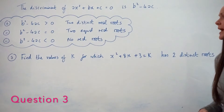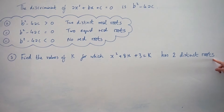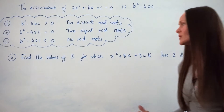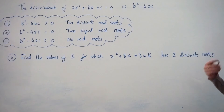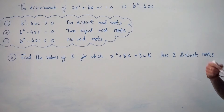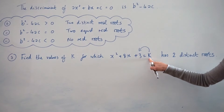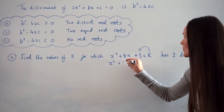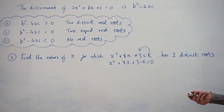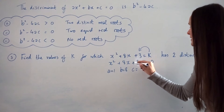In question 3, find the values of k for which x squared plus 8x plus 3 equals k has two distinct roots. When there are two distinct real roots, the discriminant is greater than zero. We'll work out the discriminant, form an inequality greater than zero, and find the values of k. First, rearrange to equal zero by moving k to the left-hand side as a negative k, giving x squared plus 8x plus 3 minus k equals zero. So a equals 1, b equals positive 8, and c equals 3 minus k.